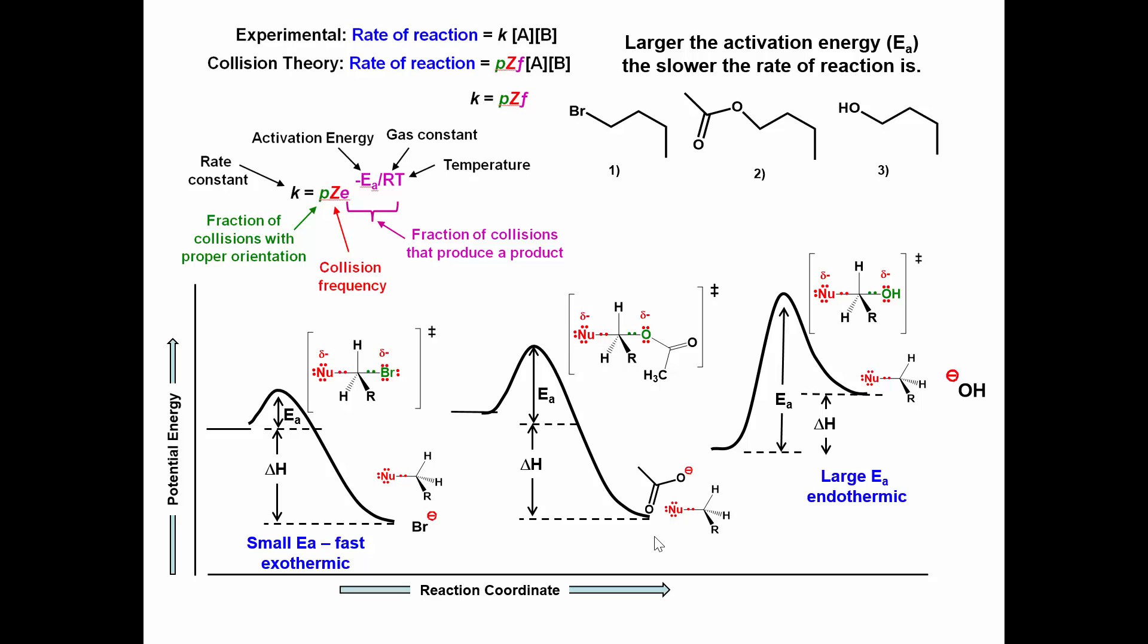The acetate ion is a weak base, but not nearly as weak as the bromide ion. This reaction would be slower than 1 but faster than 3.